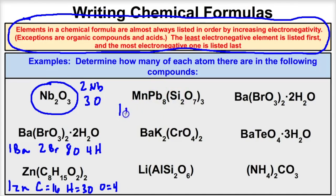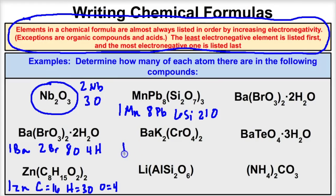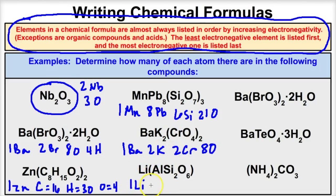The next compound has one manganese, eight leads, two times three is six silicons, and twenty-one oxygens. Looking at another compound, there is one barium, two potassium atoms, two chromium atoms, and eight oxygen atoms. The next compound has one lithium atom, one aluminum atom, two silicons, and six oxygens.